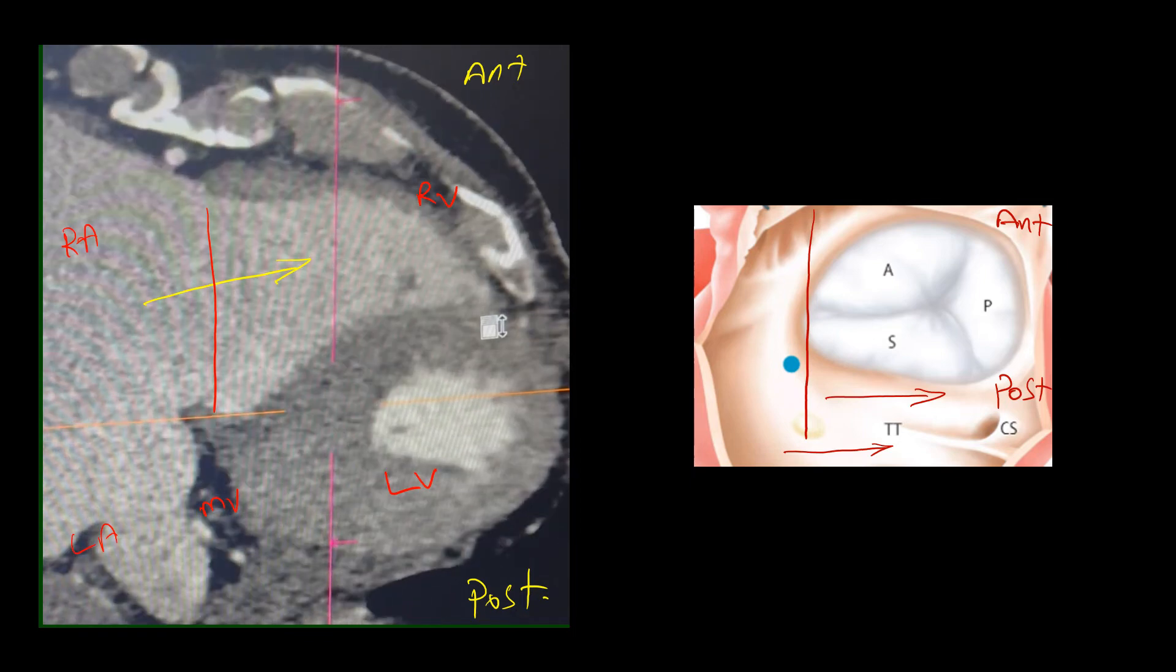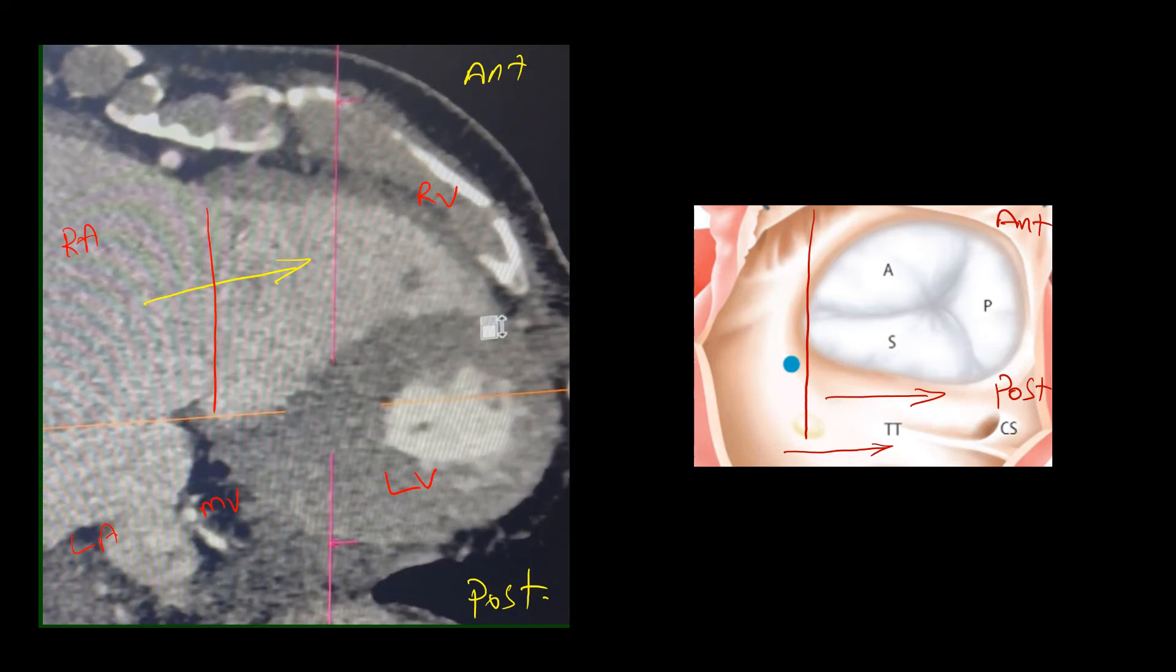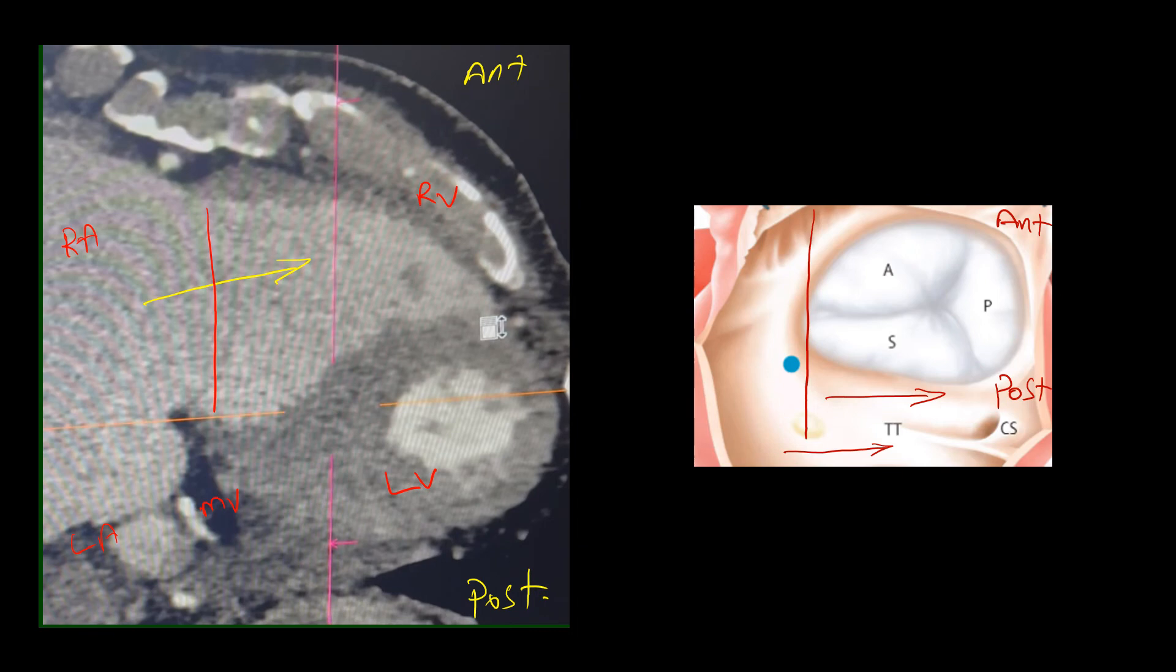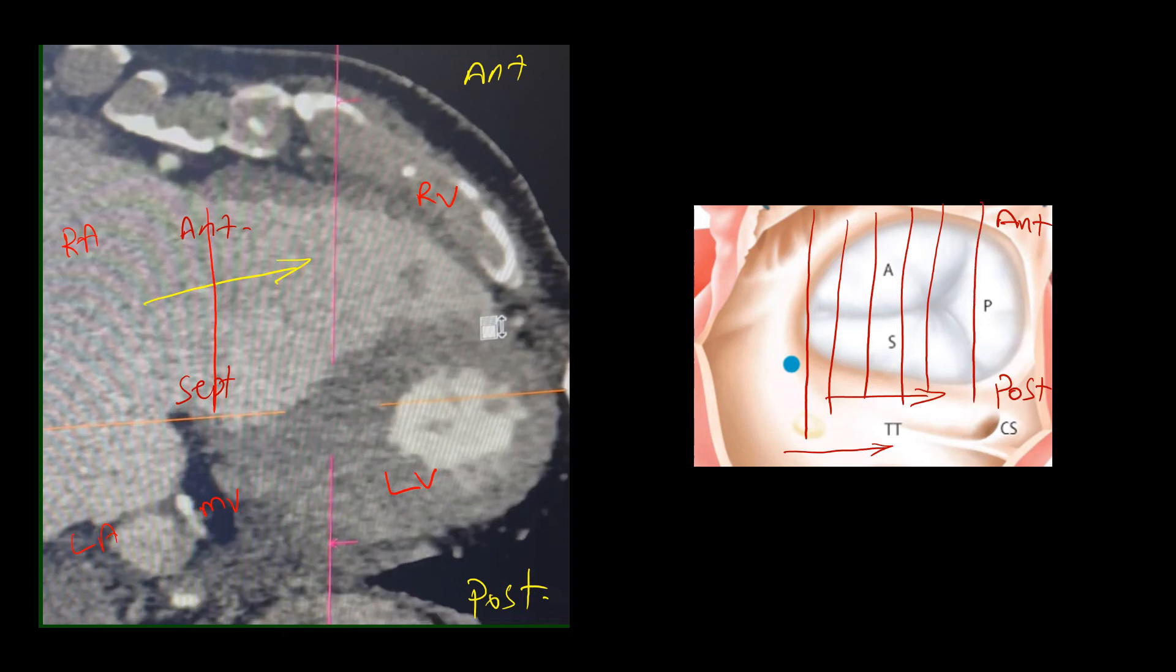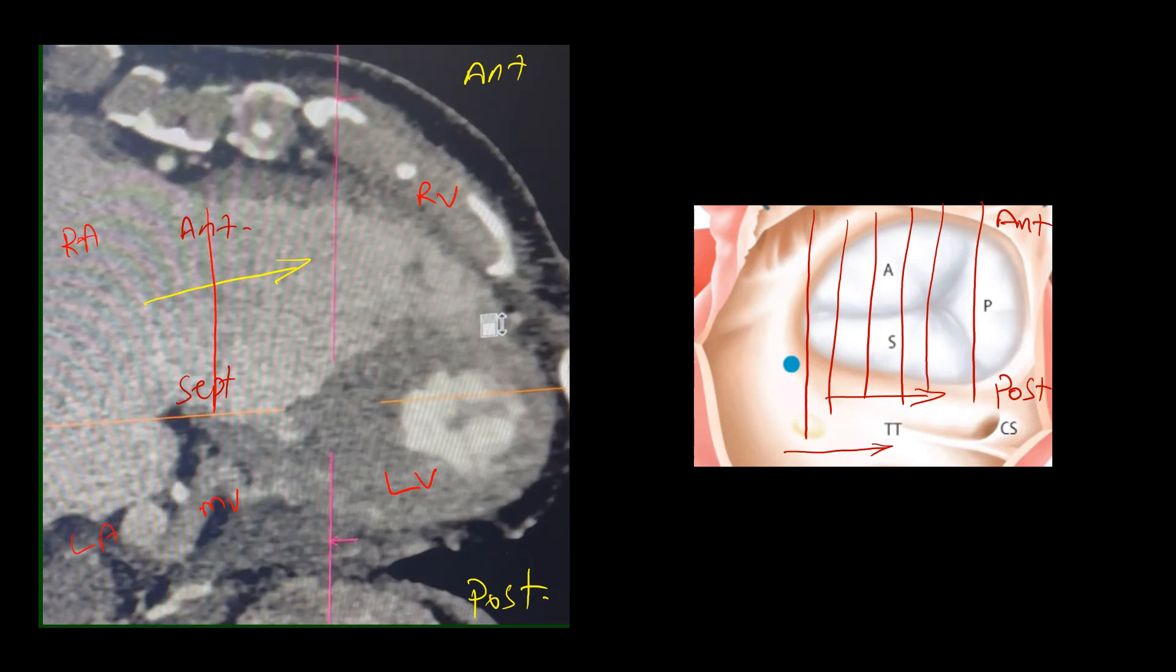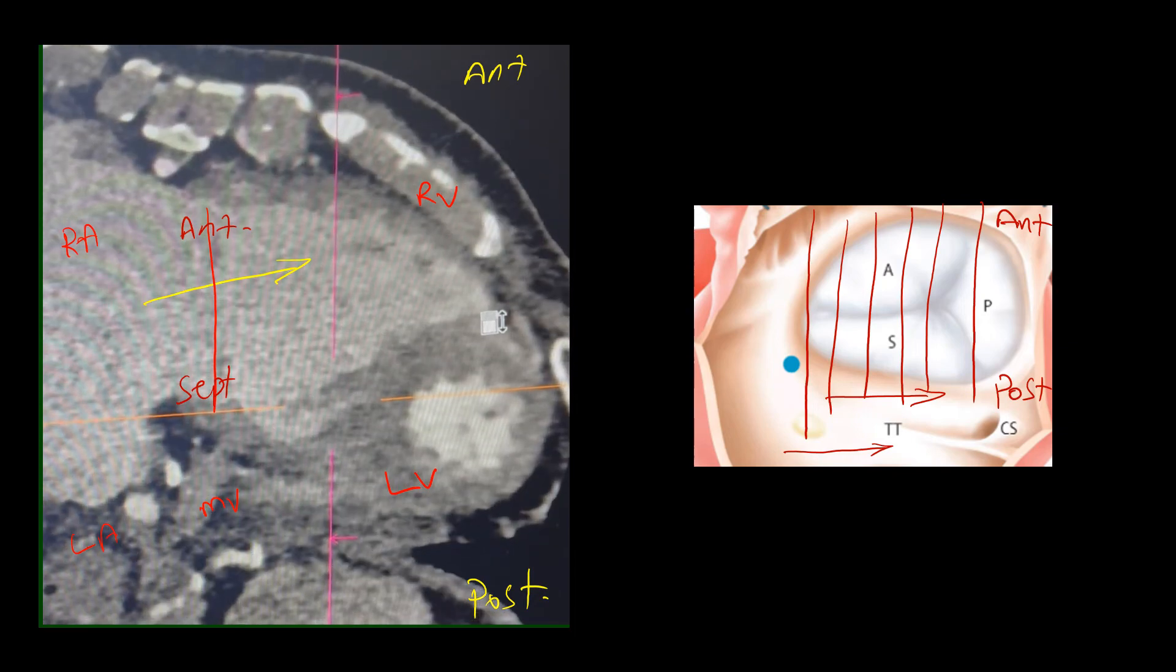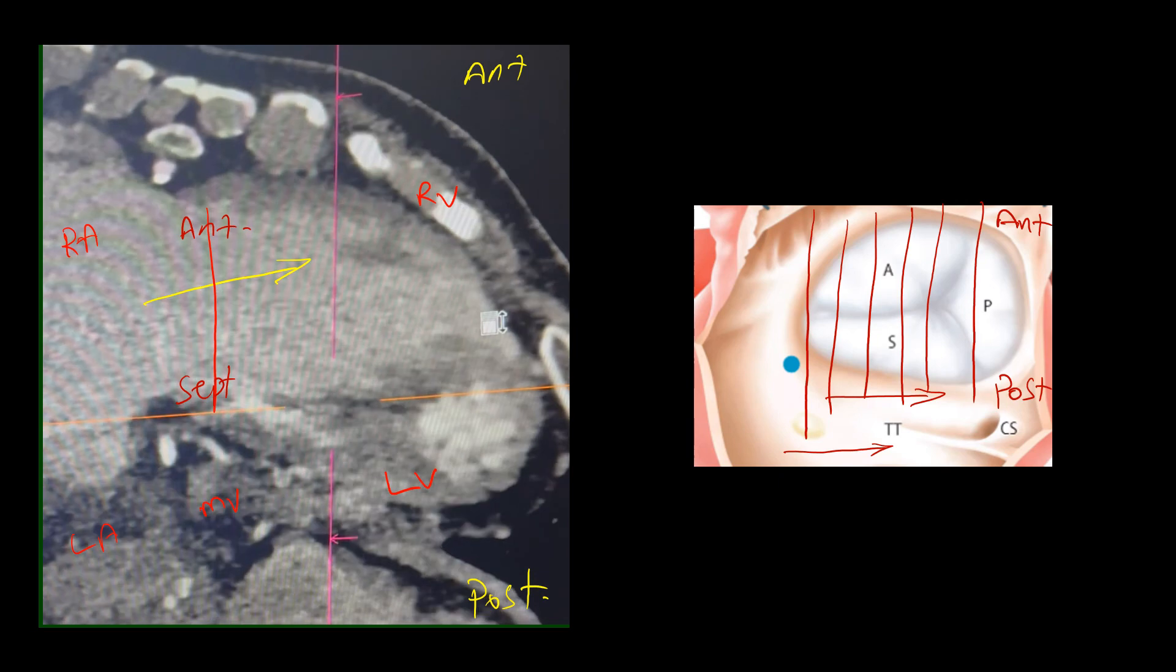As we scroll further down towards the posterior sections, we are moving further downward towards these sections. Here we should have anterior leaflet in view, and here we have septal leaflet in view. As we are moving downwards, we are going towards the posterior leaflet, moving further down. Still no sign of the pacemaker lead.